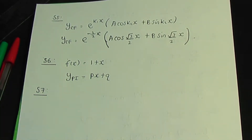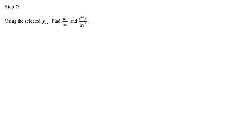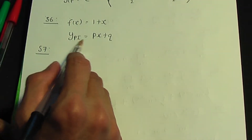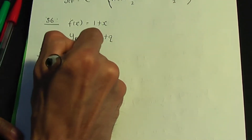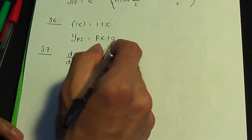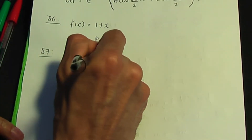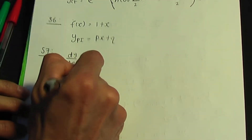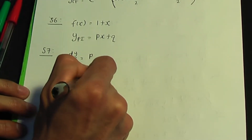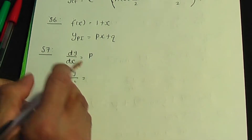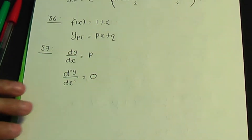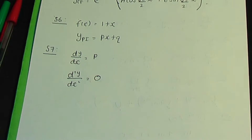Step seven: using our yPI = px + q, we compute dy/dx = p (since p and q are constants), and d²y/dx² = 0 (since differentiating the constant p gives zero).